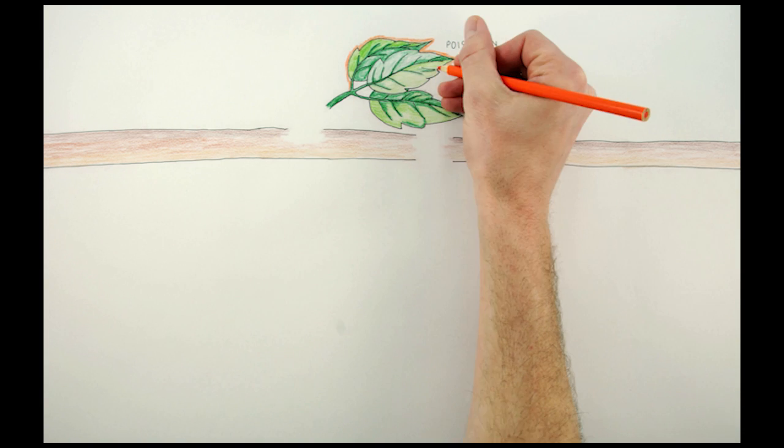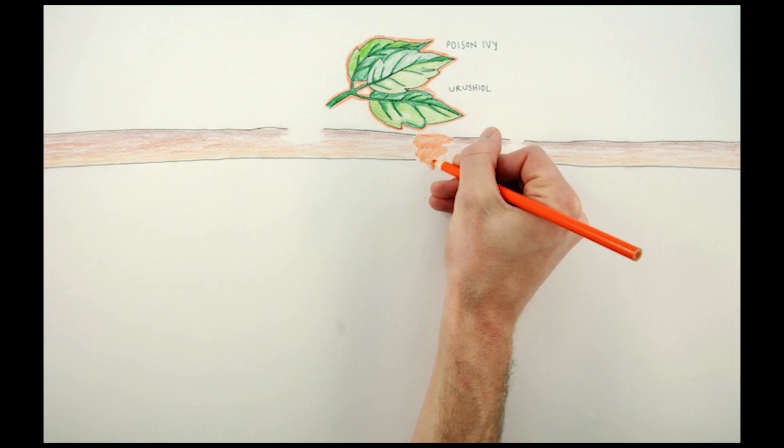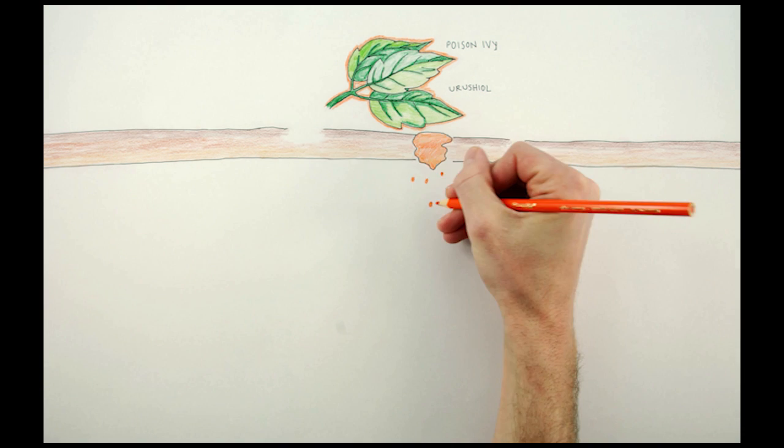Poison ivy, like its buddies poison oak and poison sumac, has an oil called urushiol. When this oil touches your skin, tiny chemicals creep in.